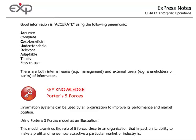Good information is accurate using the following mnemonic. We have: Accurate - if information is accurate itself; Complete; Cost-beneficial - so the cost of actually getting that information is worthwhile when we look at cost versus benefit; Understandable; Relevant to what we want it for; and Adaptable - we can change it, we can flex it.